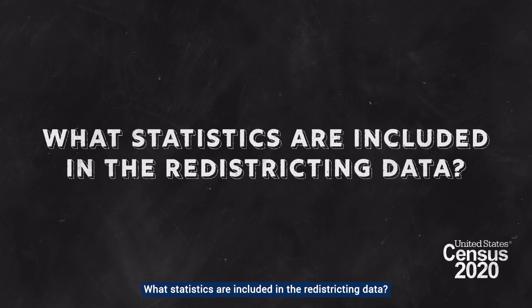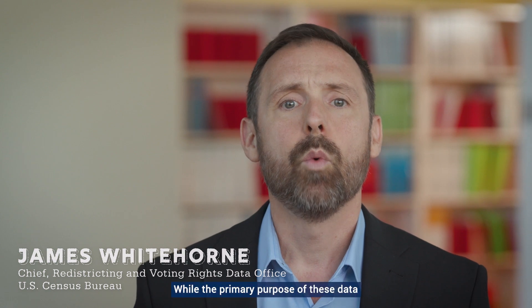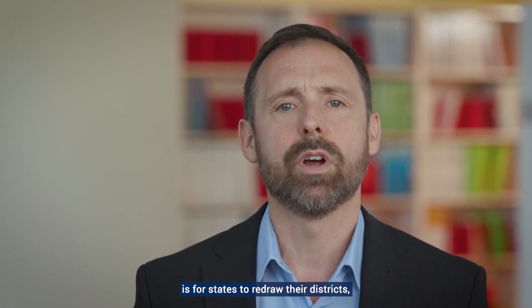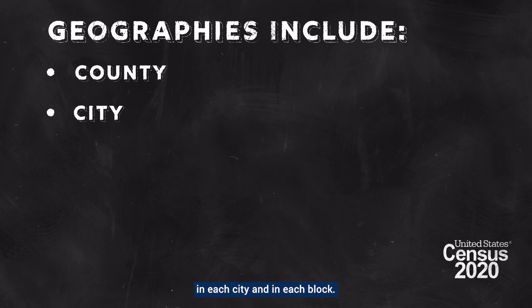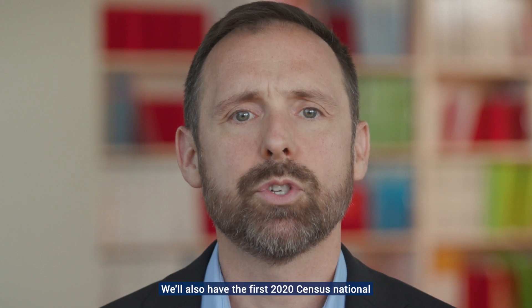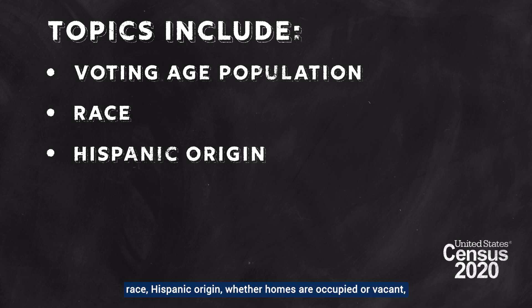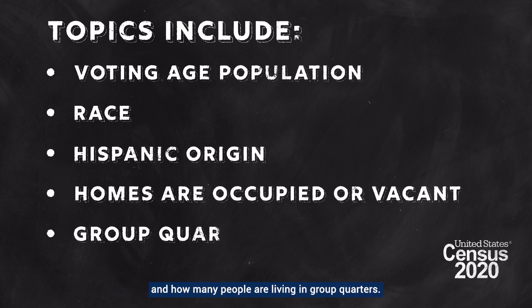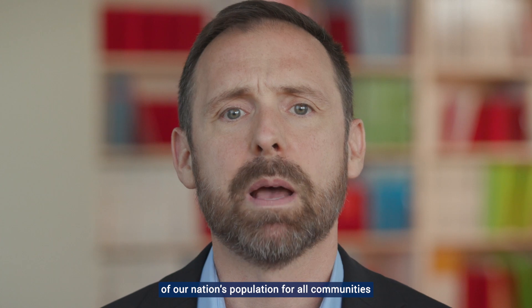What statistics are included in the redistricting data? The redistricting data provide population counts as well as demographic characteristics of ethnicity, race and voting age at all levels of geography down to the block level. While the primary purpose of these data is for states to redraw their districts, these statistics will also tell us how many people live in each county, in each city and in each block. We'll also have the first 2020 Census national and local statistics on things like voting age population, race, Hispanic origin, whether homes are occupied or vacant, and how many people are living in group quarters. This information will provide a more detailed demographic portrait of our nation's population for all communities all across the United States.